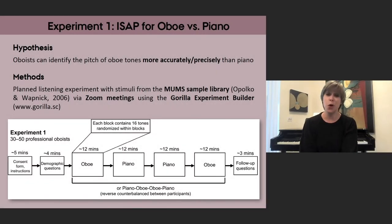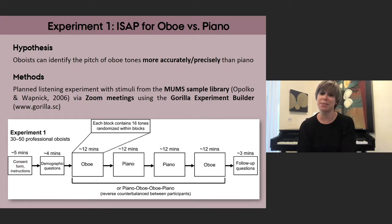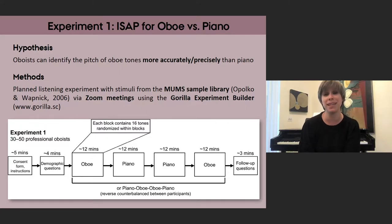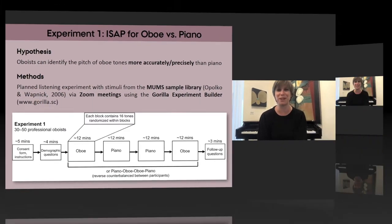The goal of experiment one is to test whether our oboist participants show more accurate and more precise pitch identification for oboe tones compared to piano tones. To do so, we will meet virtually with professional oboists who identify the pitches of single-note oboe and piano stimuli from the McGill University Master Samples library.